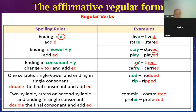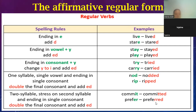The next rule: if the verb ends with a consonant letter and before the consonant letter there is a vowel letter, before we add ED we double the consonant letter. For example: nod → nodded. We double the consonant before adding ED. Also: commit → committed, prefer → preferred.